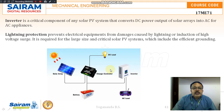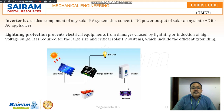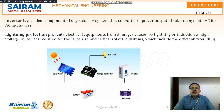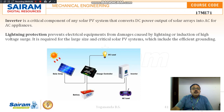Lightning protection prevents electrical equipment from damages caused by lightning or induction of high voltage surges. It is required for large-size and critical solar PV systems, which also include an efficient grounding facility.